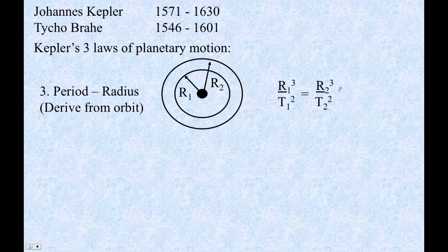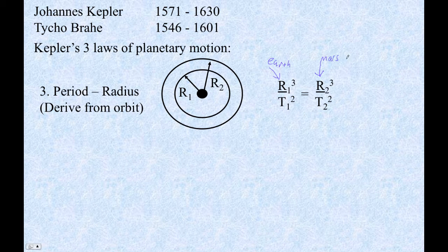The third of Kepler's laws was that if you looked at the radius of an orbit—say, let's say maybe this is Earth. The distance Earth is from the center of the sun, right? This is Earth. And then maybe this is Mars.